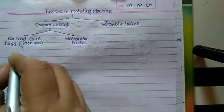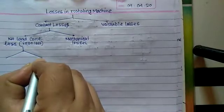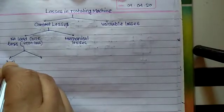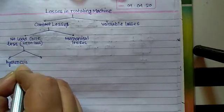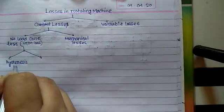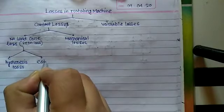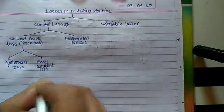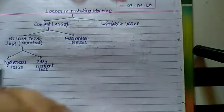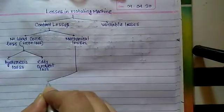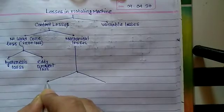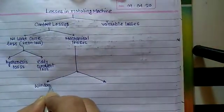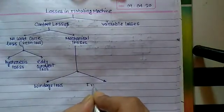Core loss has two parts: hysteresis loss and eddy current loss. Mechanical loss also has two parts: windage loss and frictional loss.